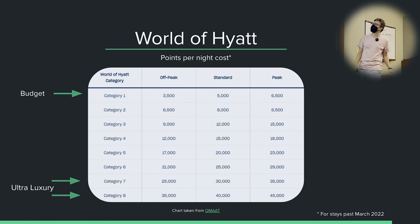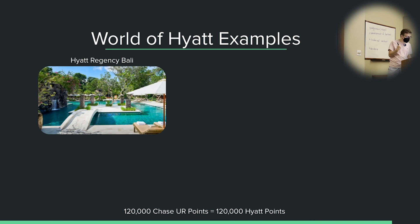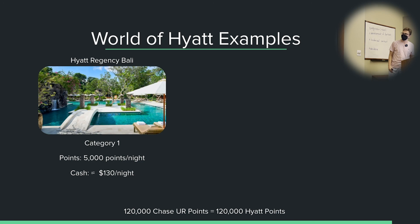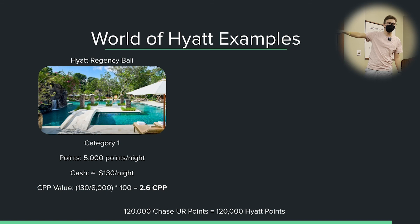This is part of the assignment this week — watch the video on the Hyatt evaluation on the Credit Cal site. Let's look at a real concrete example. Take the Hyatt Regency in Bali, Indonesia — this was just downgraded to a Category 1 hotel, which is good for us because it just got cheaper. It is 5,000 points per night and the cash rate is around $130 a night. Taking the cash price, dividing by points price, and multiplying by 100, we get a value of 2.6 cents per point. That's pretty good, especially for a hotel that only costs 5,000 points a night.